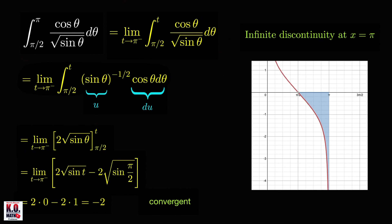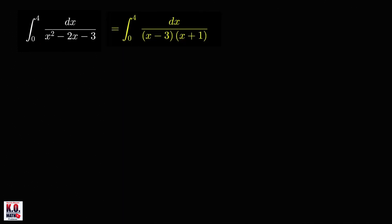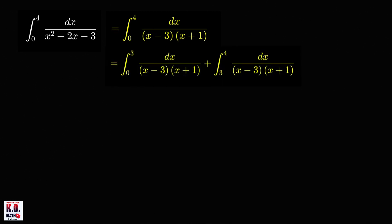Let's now move to our second problem. Is the integrand continuous on the closed interval 0 to 4? To answer that, let's factor the denominator, and we get (x − 3)(x + 1). Clearly, we have a discontinuity on the closed interval 0 to 4, and the discontinuity is at x equals 3. Therefore, this is a Type 2 improper integral. Because the discontinuity is between the limits of integration, we split it into two integrals: the integral from 0 to 3, plus the integral from 3 to 4.